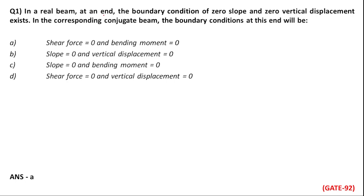In a real beam at an end, the boundary condition of zero slope and zero vertical displacement exists. In the corresponding conjugate beam, the boundary conditions at this end will be?